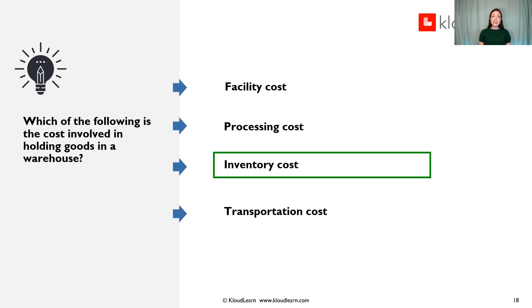Which of the following is the cost involved in holding goods in a warehouse? A, facility cost; B, processing cost; C, inventory cost; or D, transportation cost? The cost of holding goods in a warehouse is referred to as inventory cost.